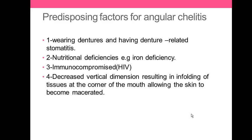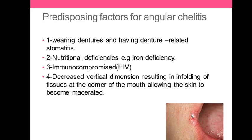A decreased vertical dimension results in folding of the tissue at the corners, which leads to formation of angular cheilitis. As you can see in the image, this is what angular cheilitis looks like at the commissure — it is normally found on both sides of the lips.